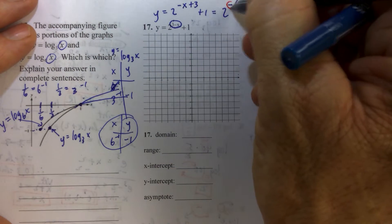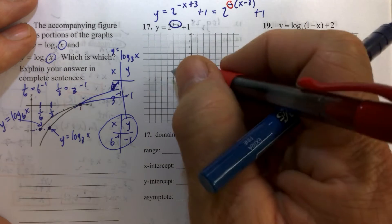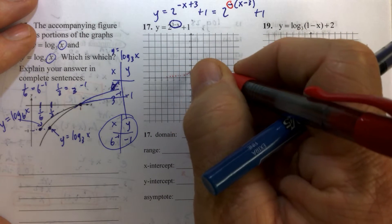So that means we have a parent function of y equals 2 to the x, and 2 to the x looks like that.